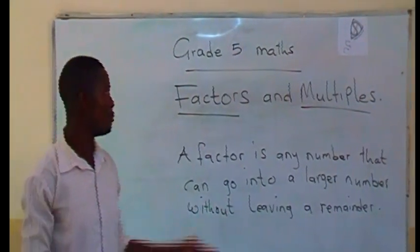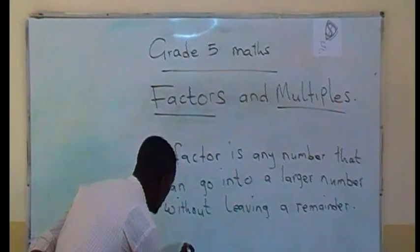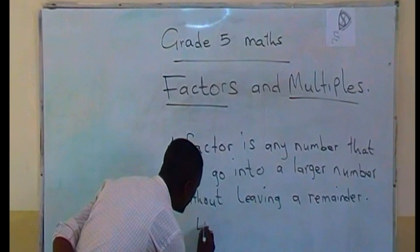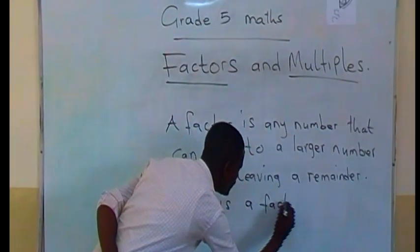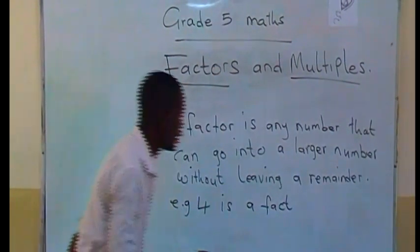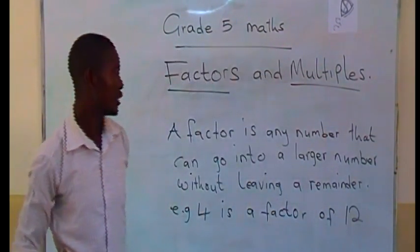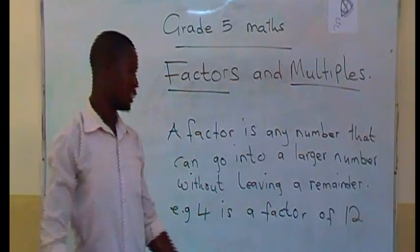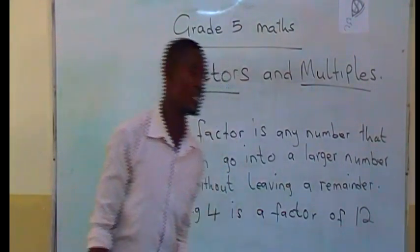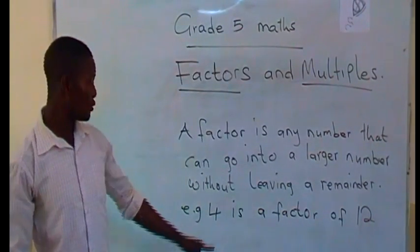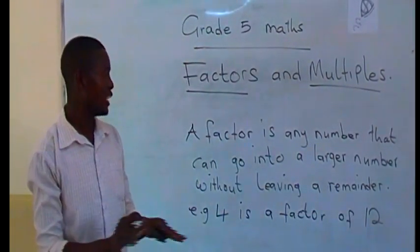We can give some examples of factors. For example, 4 is a factor of 12. Someone can ask you, why is 4 a factor of 12? Because 4 can go into 12 exactly without leaving a remainder.